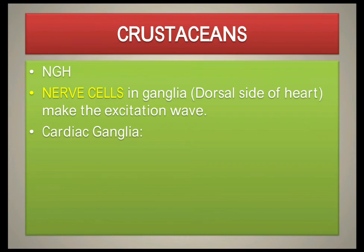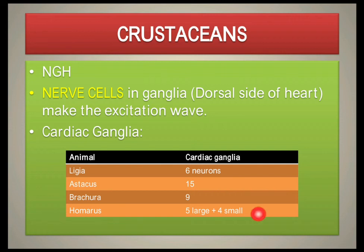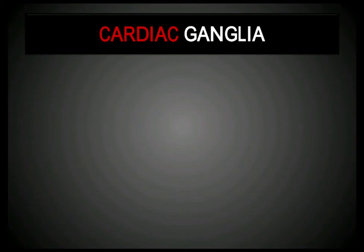This chart shows the number of cardiac ganglia in different animals. Ligia has 6 cardiac ganglia, Astacus has 15, the Bacura group has 9, and Homerus has 9 — five large and four small in size. These animals have different numbers of cardiac ganglia which are functional to contract the heart.